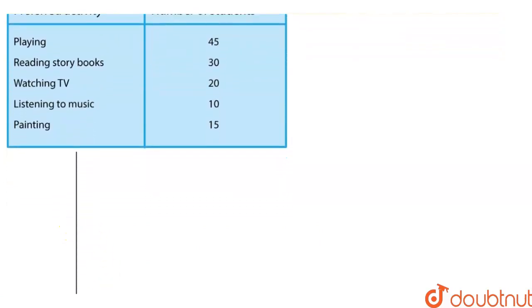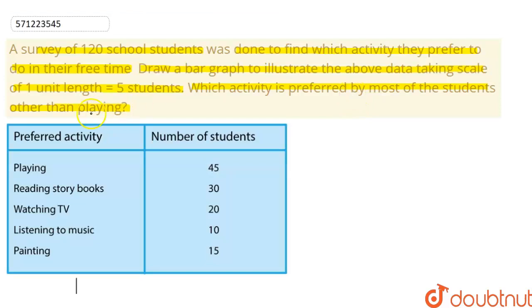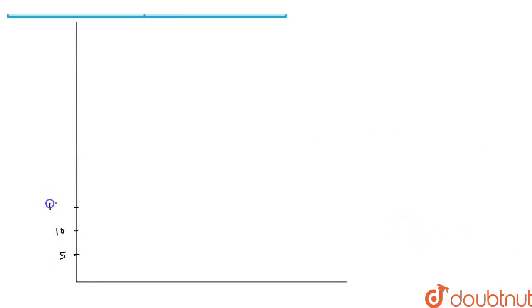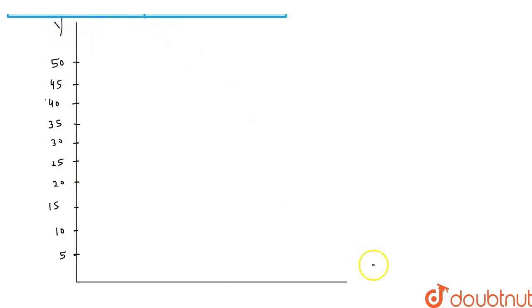So first, we draw our graph. In the question, we are also given the scale which we need to follow while drawing the graph — one unit length should be equal to five students. So on the y-axis, we mark: 5, 10, 15, 20, 25, 30, 35, 40, 45, 50. This is our y-axis.